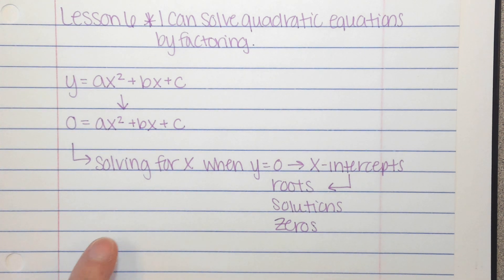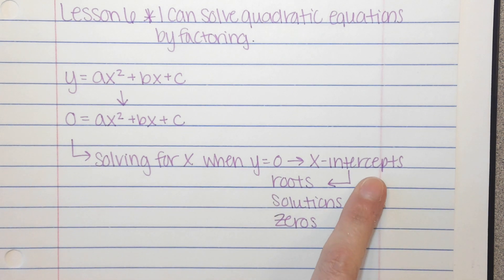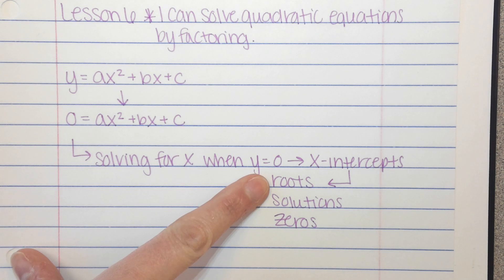So if we're solving for x when y equals 0, that means we're finding the x-intercepts. If you were looking at a graph, our solutions would be the x-intercepts. And those are also sometimes called roots, solutions, and zeros.